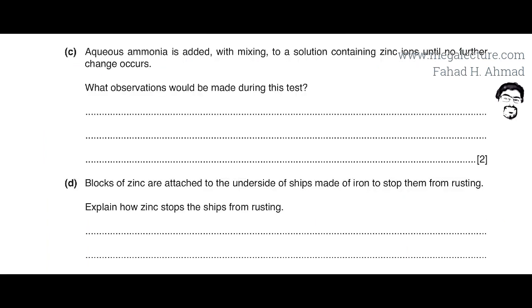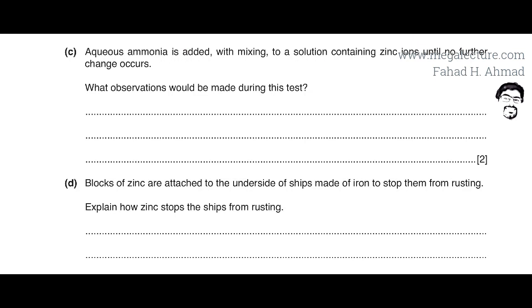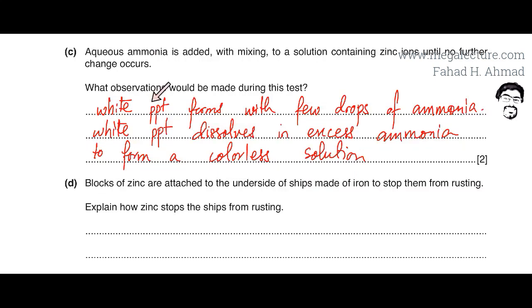The next part states that aqueous ammonia is added with mixing to a solution containing zinc ions until no further change occurs. A white precipitate forms when a few drops of ammonia are added, and this white precipitate of zinc hydroxide dissolves in excess ammonia to form a colorless solution. This is the test for zinc cations.